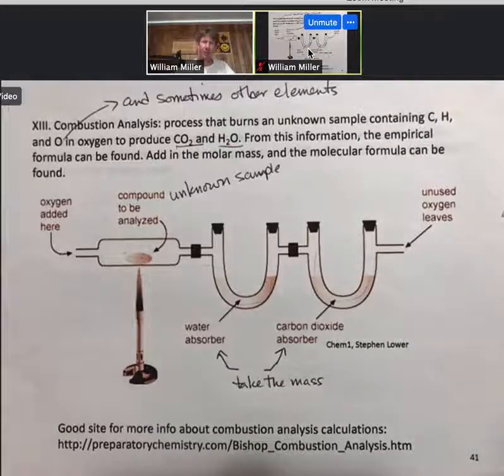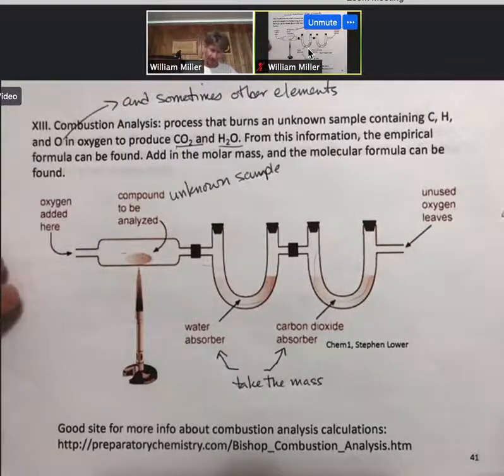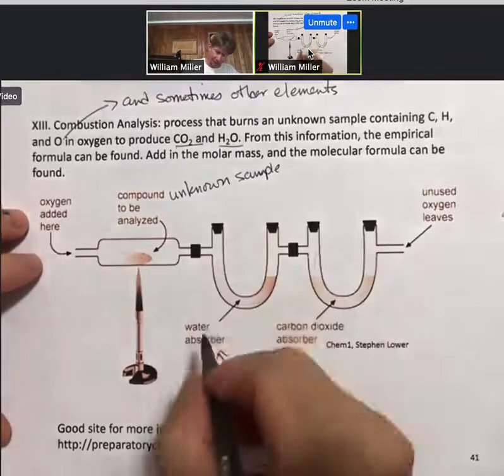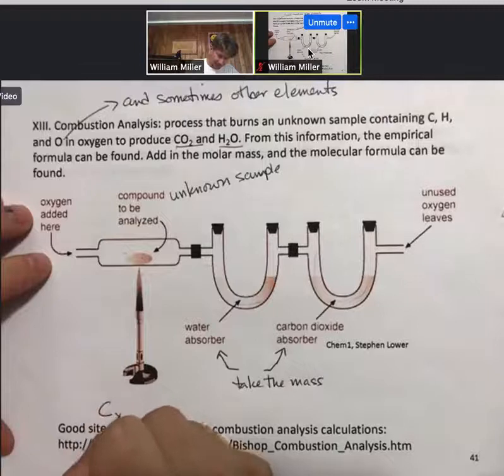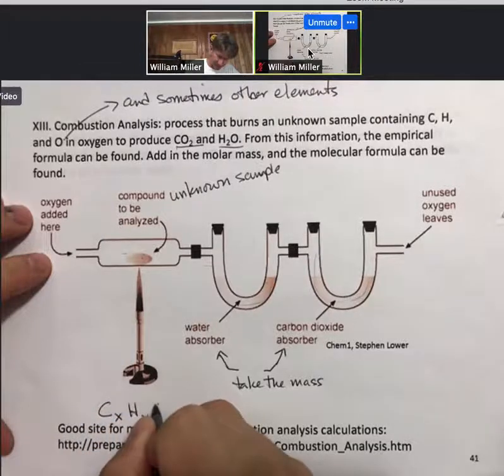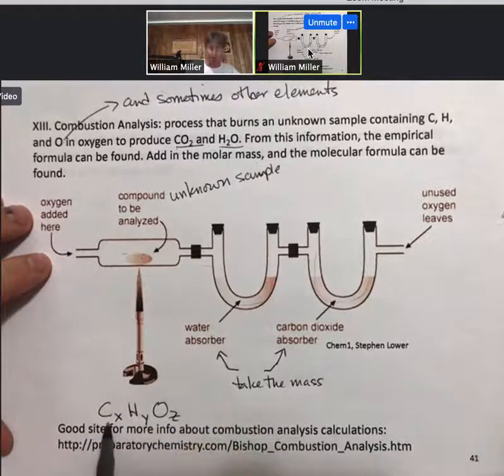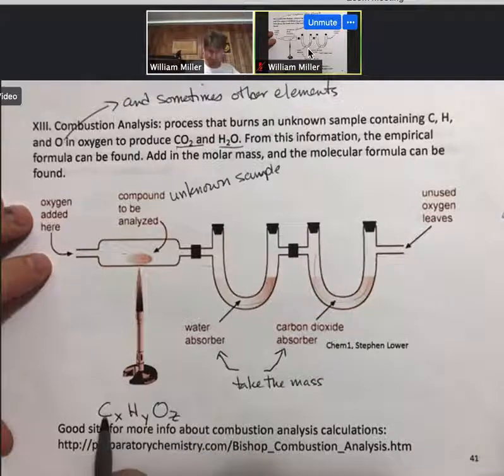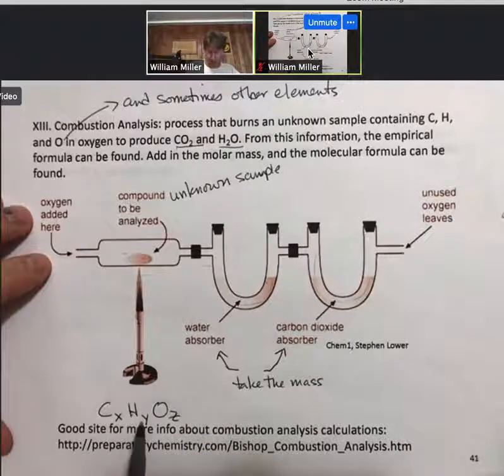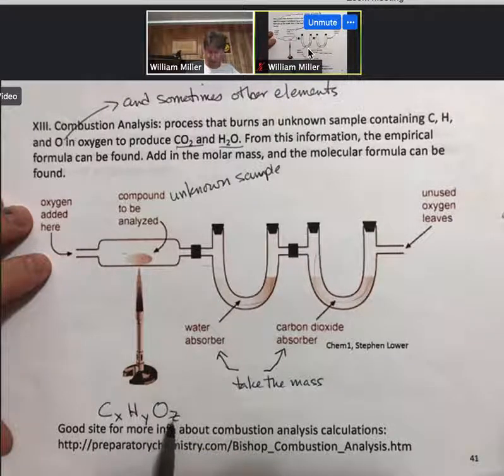Now I'm going to write a version of a reaction here. It's going to say that our unknown will be represented by this formula here, C sub X, H sub Y, O sub Z, where X, Y, and Z are the subscripts that we normally find in chemical formulas.